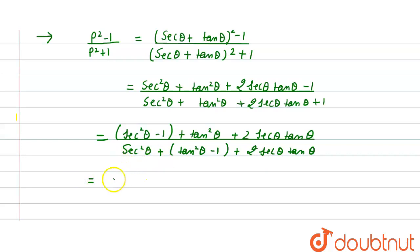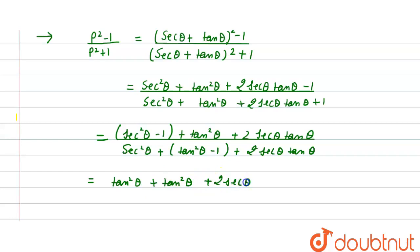Now it becomes tan²θ + tan²θ + 2 sec θ tan θ, since we know the identity sec²θ - tan²θ = 1, so sec²θ - 1 = tan²θ.